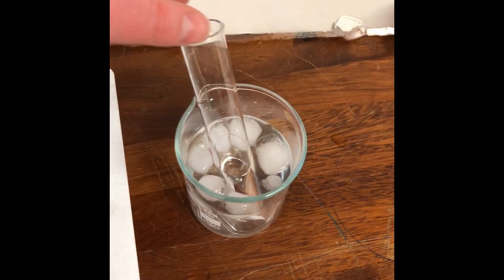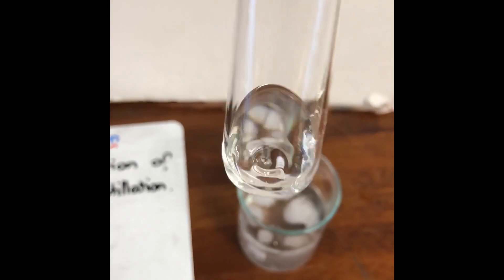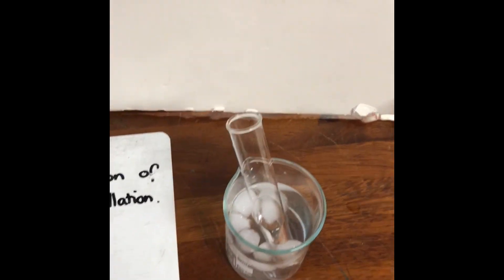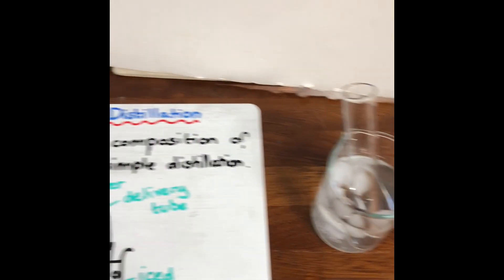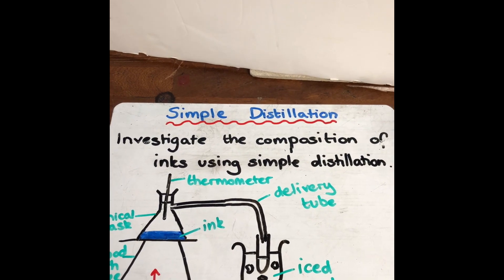And you can see that if I take the boiling tube out of the ice water, there is just some pure water in the bottom. And in the conical flask, which you can't see right now, we just have the ink left. And so what we've done is we've separated the ink from the water. And that is distillation.